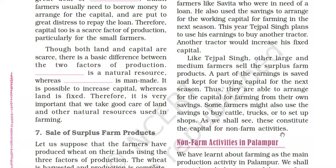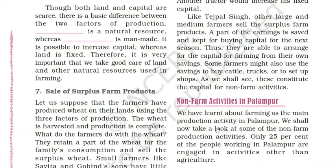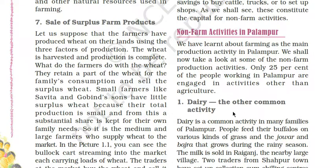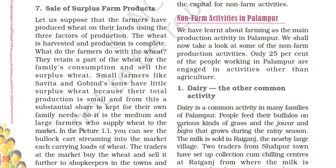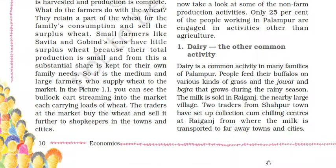Now, something about non-farm activities in Palampur. We have learnt about farming as the main production activity. Only 25% of people working in Palampur are engaged in non-agriculture activities. Dairy is a common activity: families feed their buffaloes on various grasses, jowar and bajra. Milk is sold in Raigunj and nearby large villages. Two traders from Shahpur town have set up collection and chilling centers at Raigunj from where milk is transported to far away towns and cities.